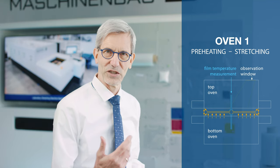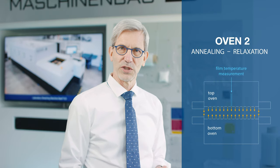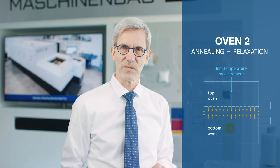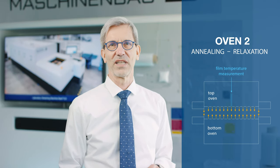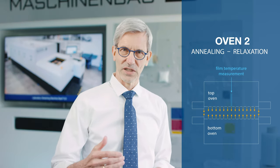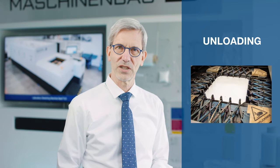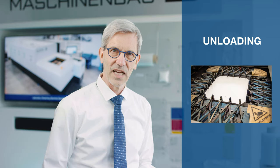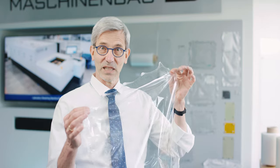After the stretching is finished, the tenter will be driven into the second oven, which usually has a different temperature. Here the film can be annealed and relaxed if necessary. After the procedure is finished, the tenter returns to the inlet position, ready for the operator to remove the sample, and this is what the result looks like.